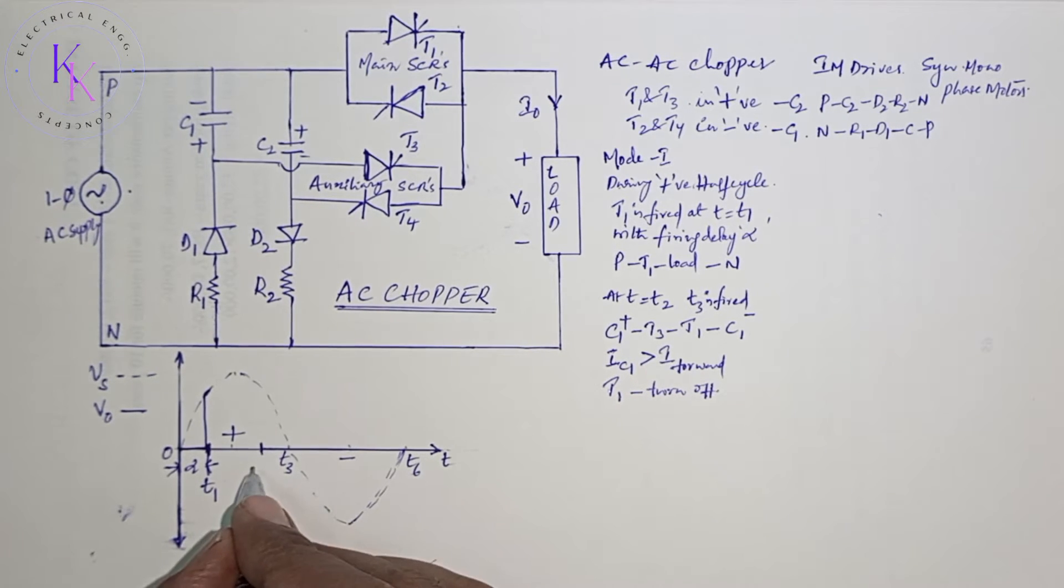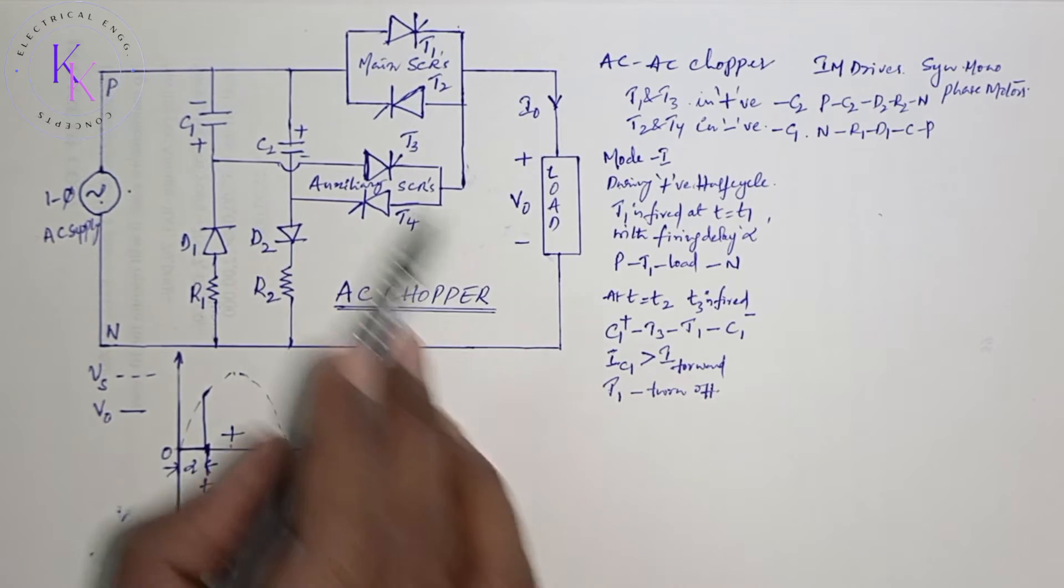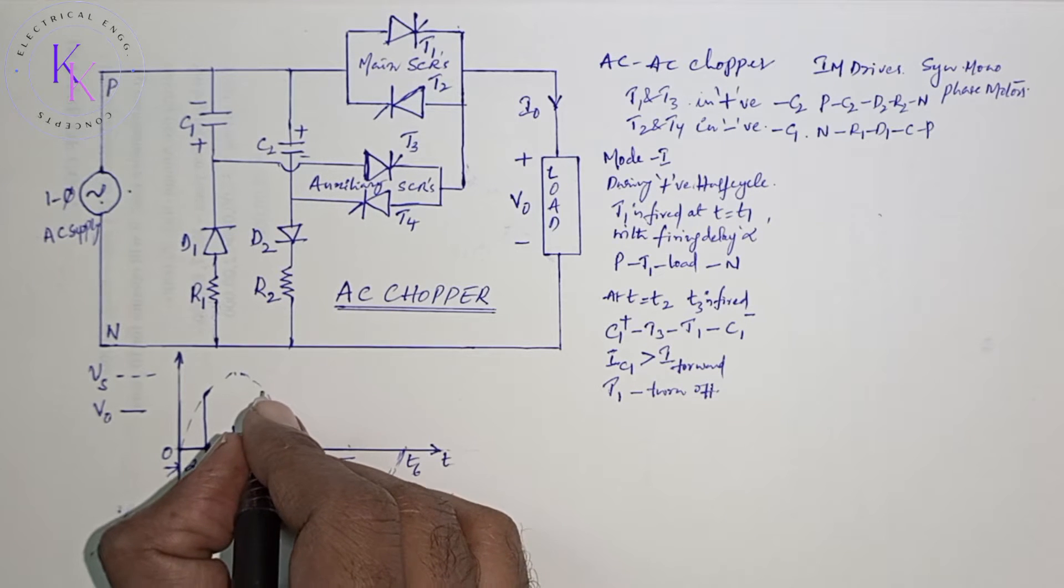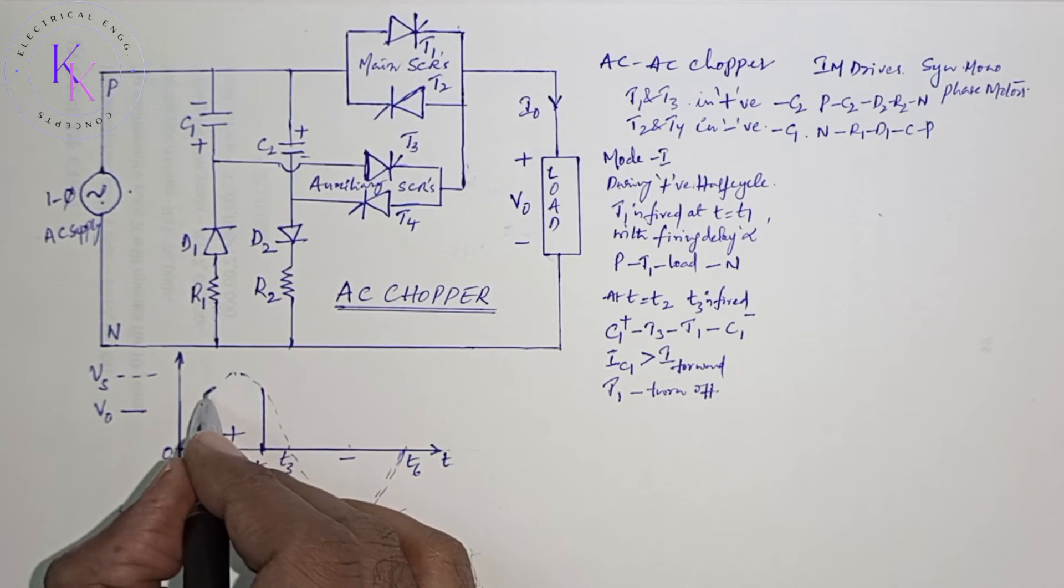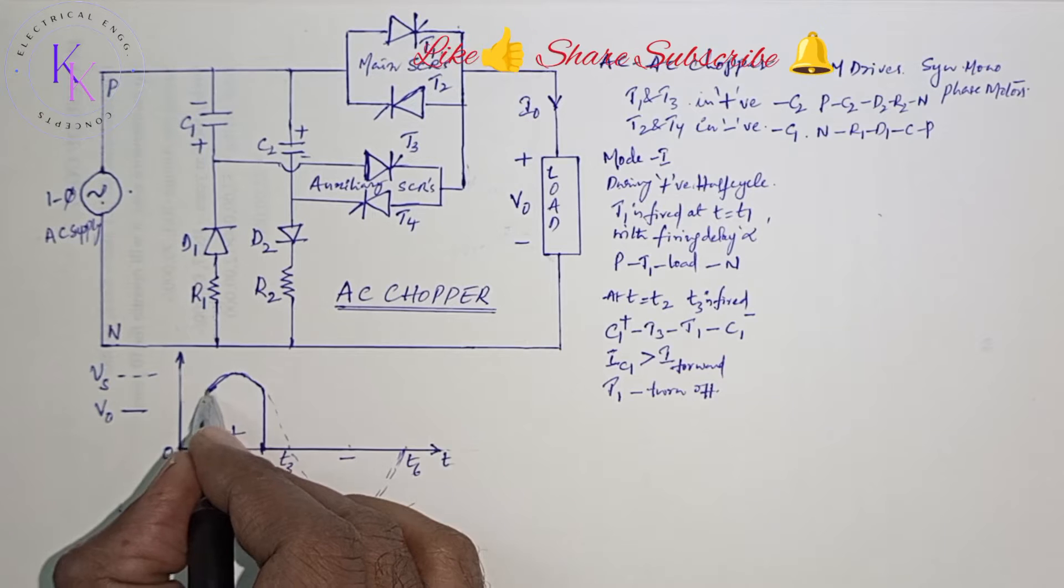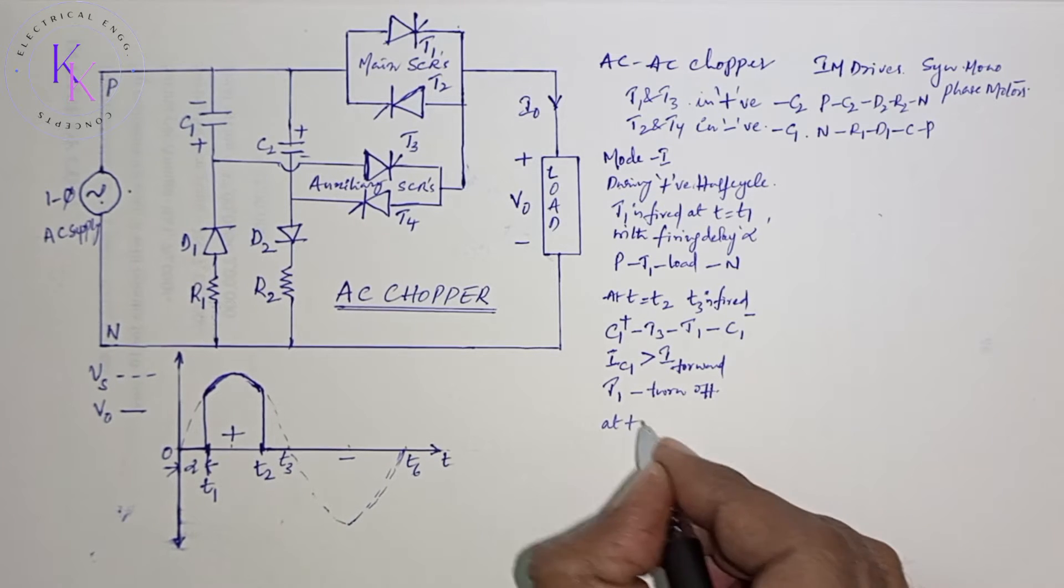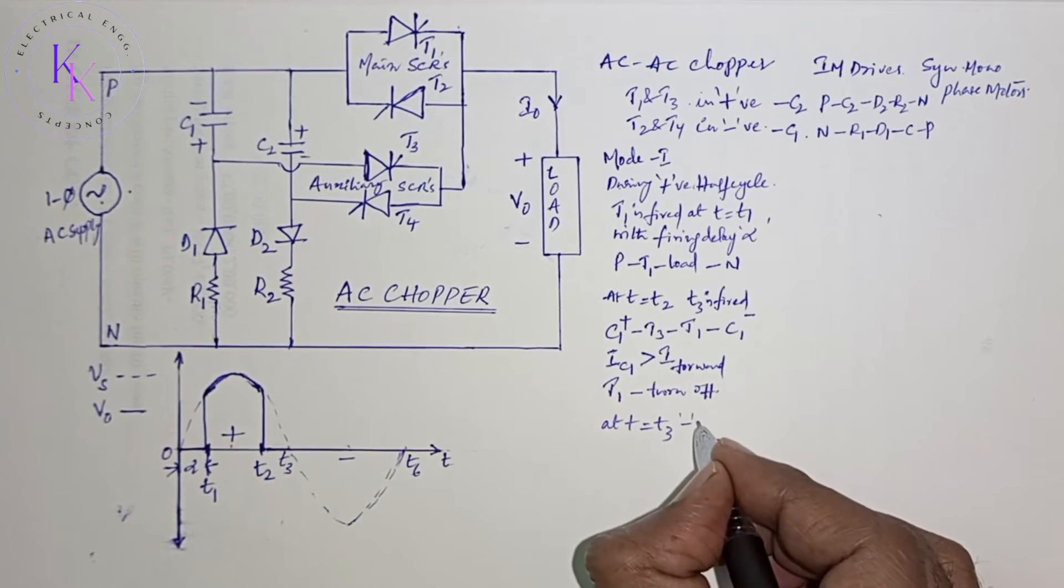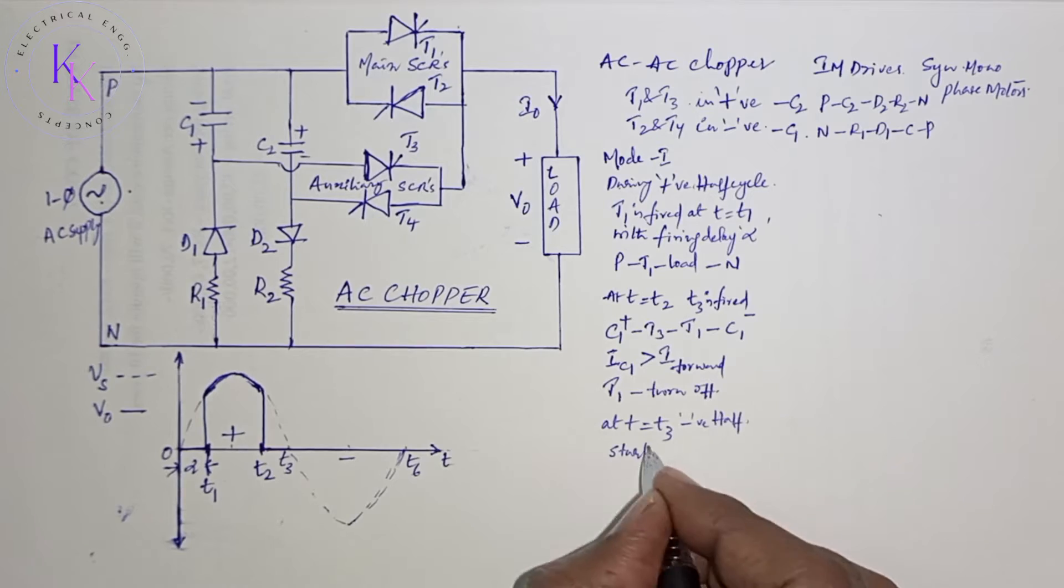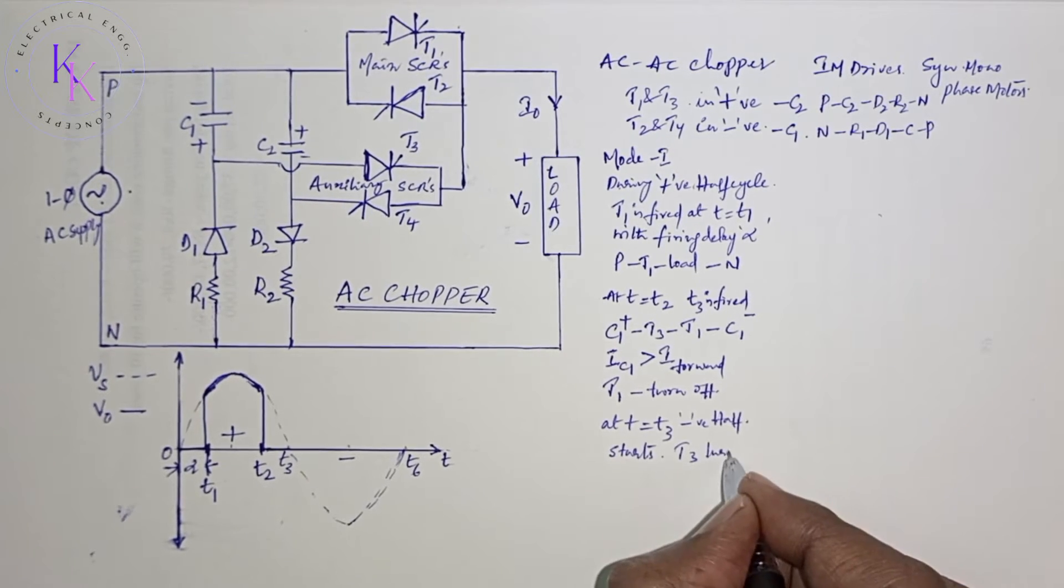I am considering this point as T2 where T3 is turned on. Until this point, the output voltage will be equal to the input voltage Vs. After that, T3 will turn off at T3 due to zero current as the negative half cycle starts. At T equals to T3, negative half cycle starts, which makes T3 turn off.